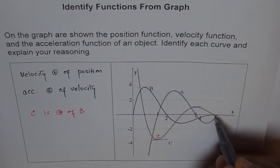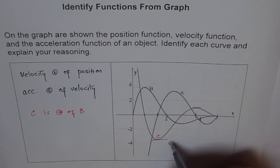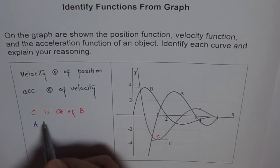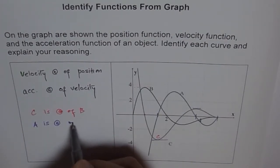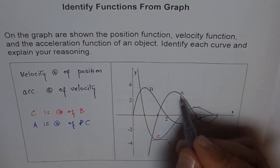So rate of change of C is represented by A. So A is rate of change of C. Let's check A also. A has a zero here, so let me use a different ink here. A has a zero here.